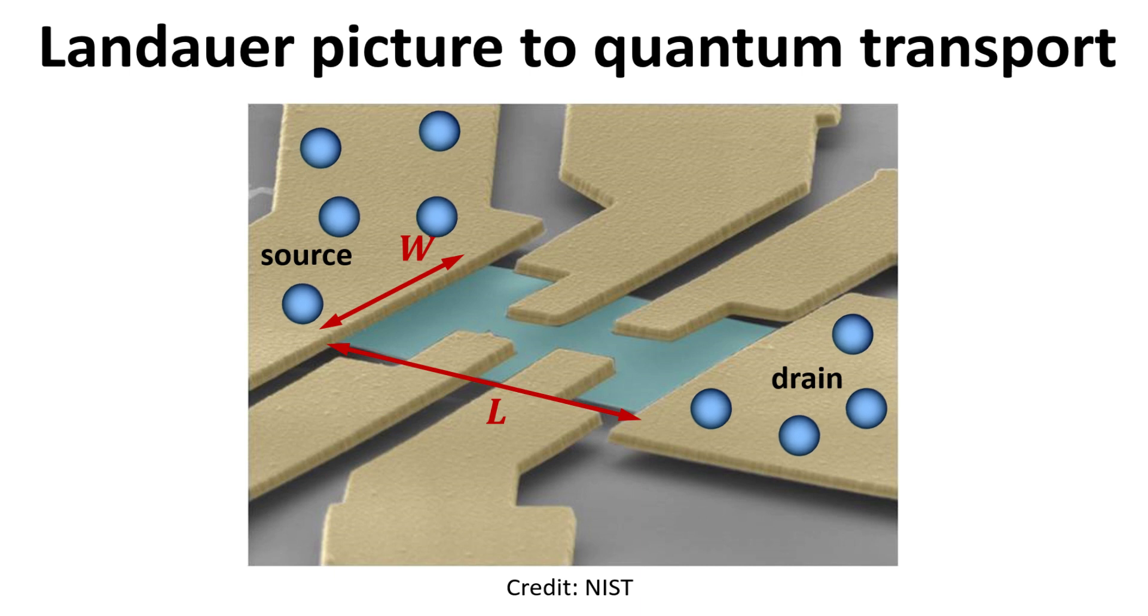We shall adopt the Landauer picture for quantum transport, which we introduced in a separate video, linked in the description of this video. The main idea is to think of electrical current flow as due to electrons injected from the two electrical contacts, herein denoted as the source and drain. We consider a graphene channel with width w and length l as shown.